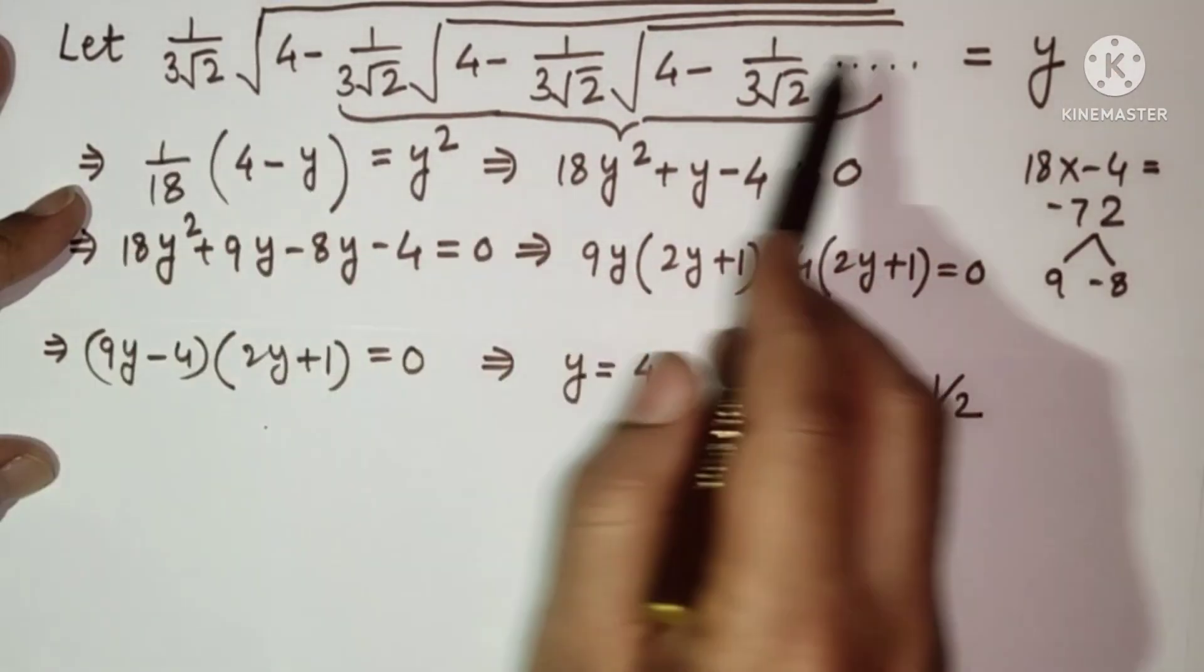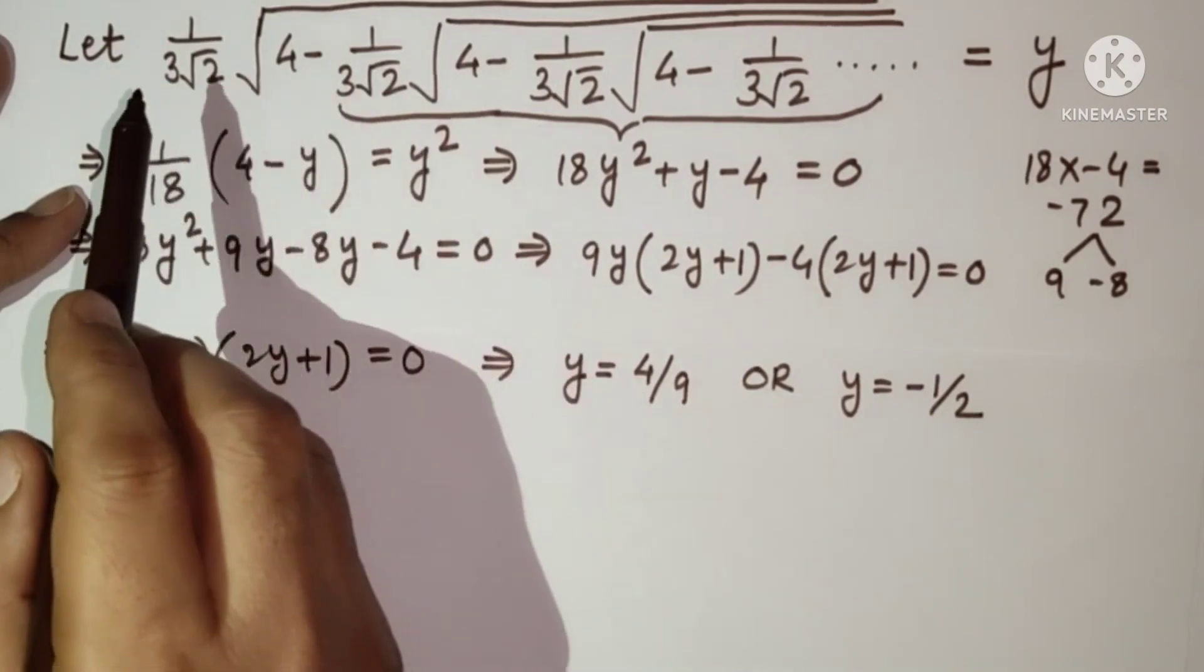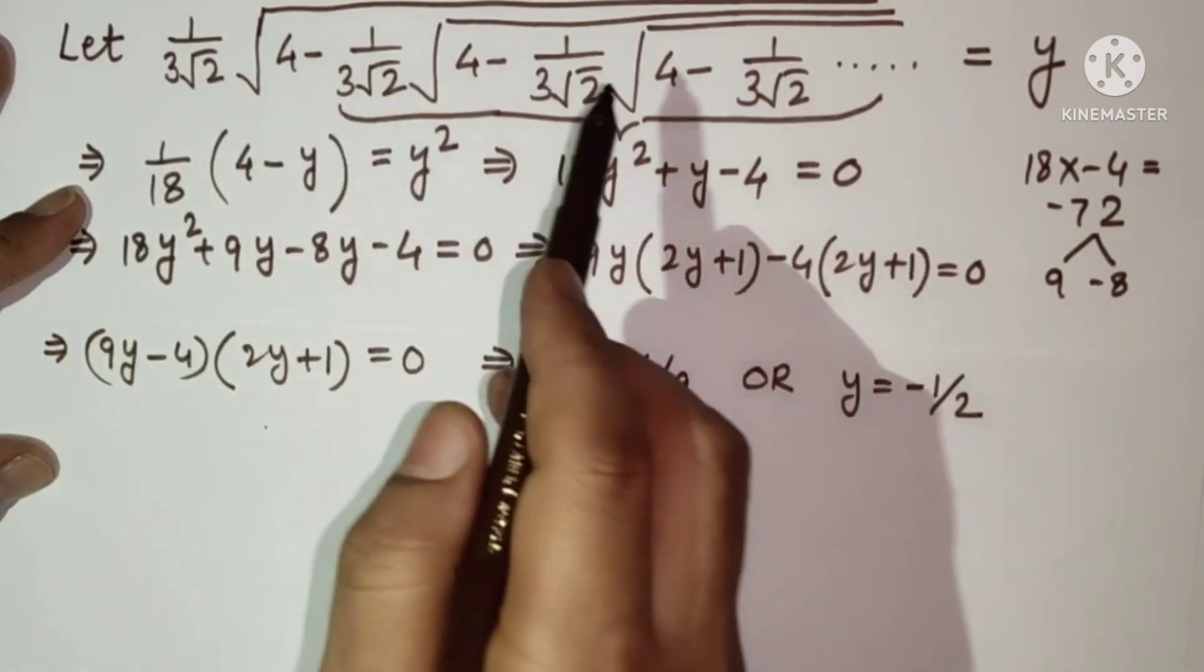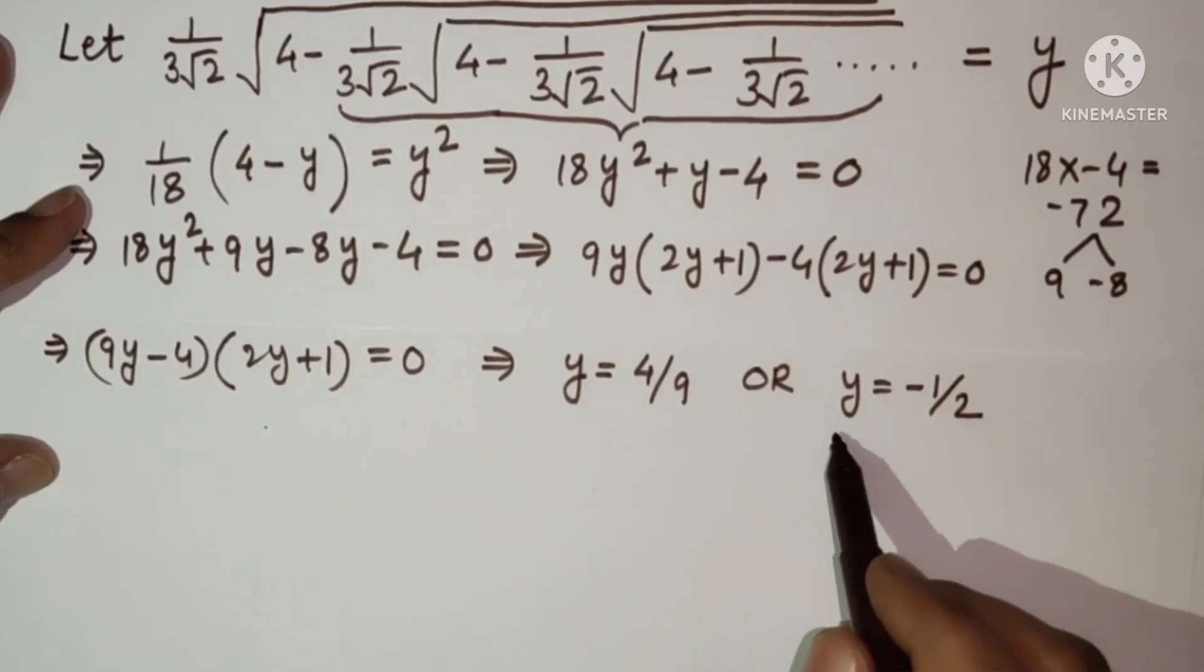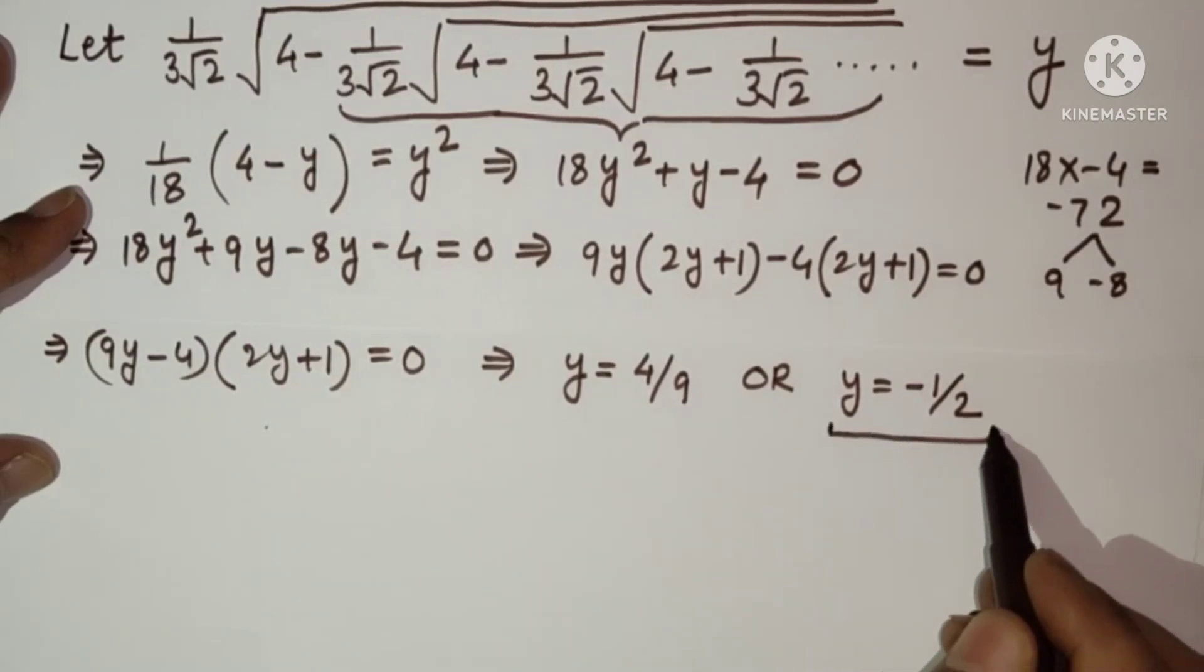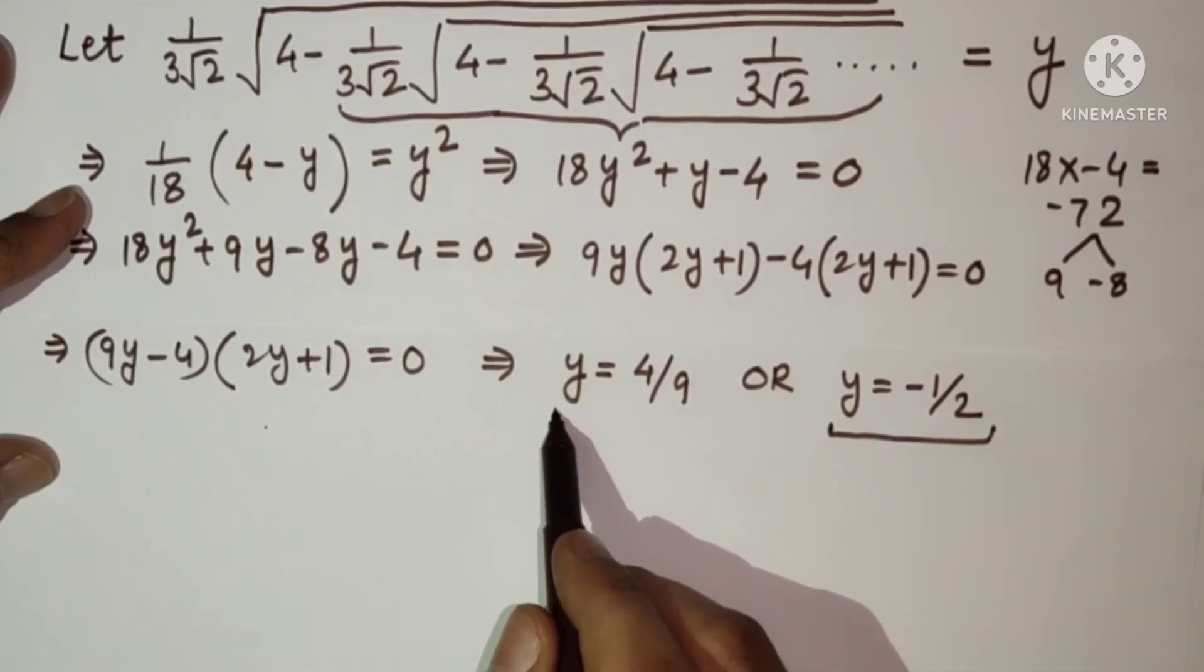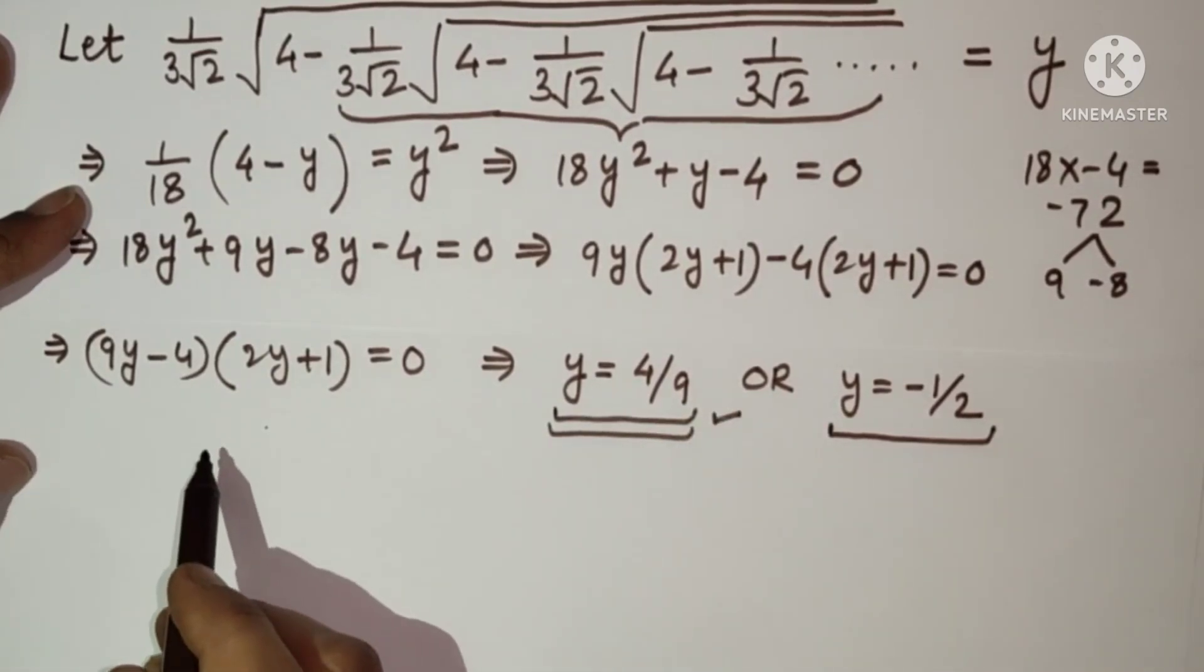So if we take minus half, so this will be minus half. So 6 plus log of minus half - log negative will not be defined, so this value of y will be rejected.